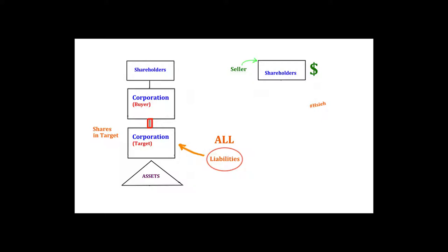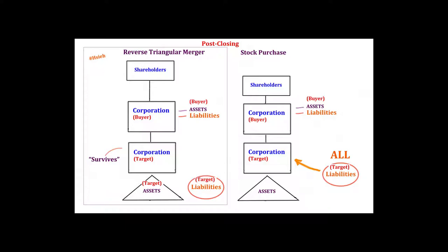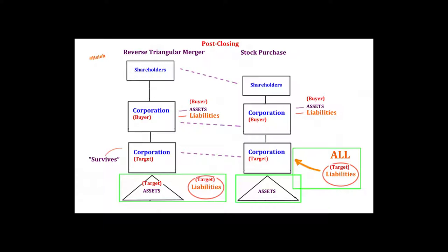Now let's compare the post-closing structure of the reverse triangular merger with the post-closing structure of the stock purchase transaction. They look very similar. In both cases, you have the buyer shareholders up top, the buyer in the middle. You can see in both cases how the target has become a wholly owned subsidiary of the buyer, and how the target assets and liabilities remain with the target.